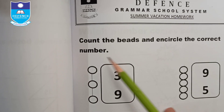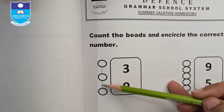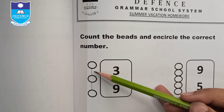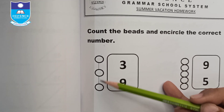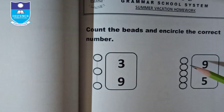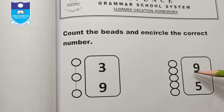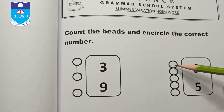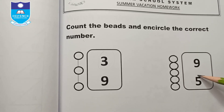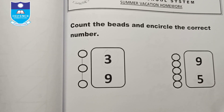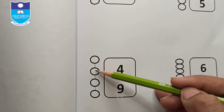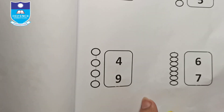Count the beads and encircle the correct number. In the first picture, count the beads: one, two, three — encircle 3. In the second picture, count: one, two, three, four, five — encircle 5. Similarly, count all the beads and circle the correct option.